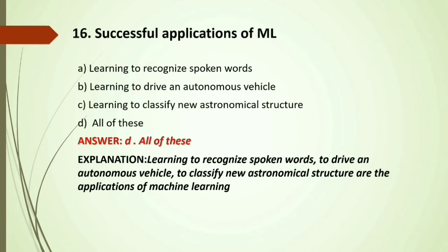MCQ: Successful applications of machine learning include — A) Learning to recognize spoken words; B) Learning to drive an autonomous vehicle; C) Learning to classify new astronomical structures; D) All of these. Answer: D, all of these — recognizing spoken words, driving an autonomous vehicle, and classifying new astronomical structures are all applications of machine learning.